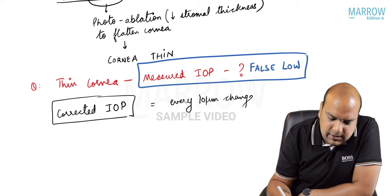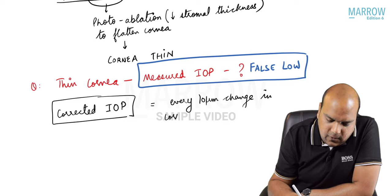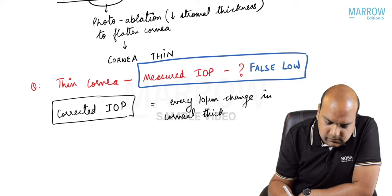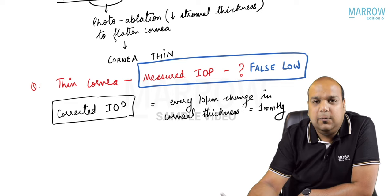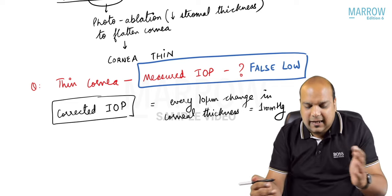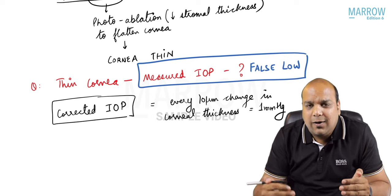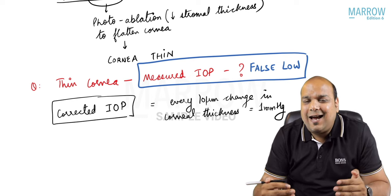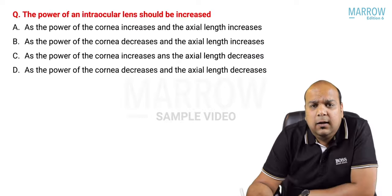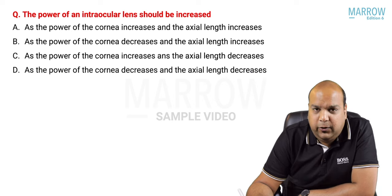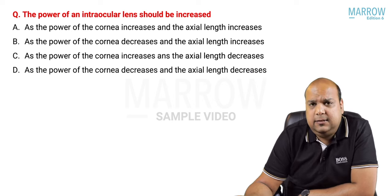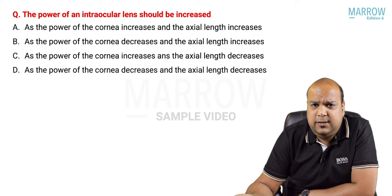Roughly, we say the corrected IOP must be calculated: every 10 microns change in corneal thickness equals 1 mmHg of IOP. That is the key relationship between corneal thickness and tonometry.